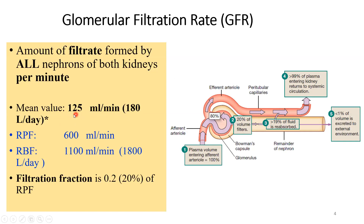For the kidneys to filter this amount of filtrate at the glomerulus, the glomerulus needs to be supplied accordingly. Renal blood flow is 1100 ml per minute, of which plasma is roughly half — about 600 ml per minute. In some books you may find 1200 ml per minute; it varies. If this amount of blood carrying this amount of plasma enters the glomeruli per minute, you will get a GFR of 125 ml per minute.